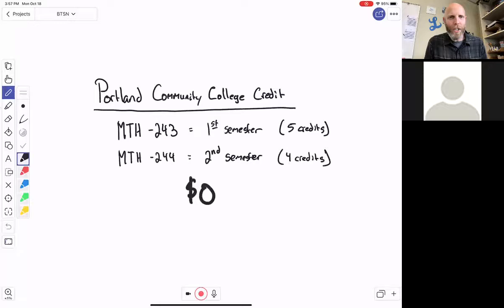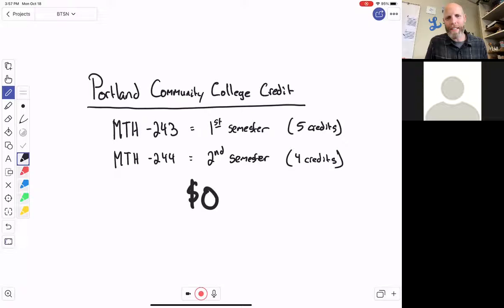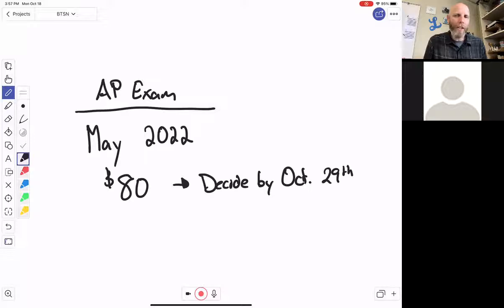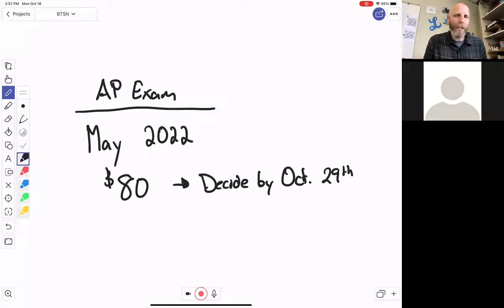We won't register for Portland Community College until November for the first semester and then until April for the second semester. And then this AP exam, if we're going to take the AP exam, we need to know by October 29th that yes or no in order to make sure we're registered. Now, students can take both, so that you always have your options at the end of the year on which one you want to present to your college.